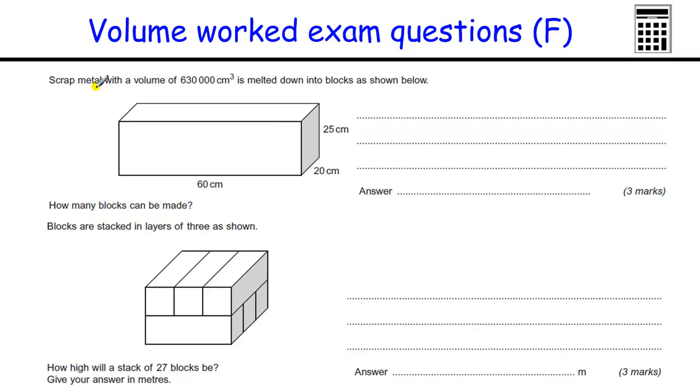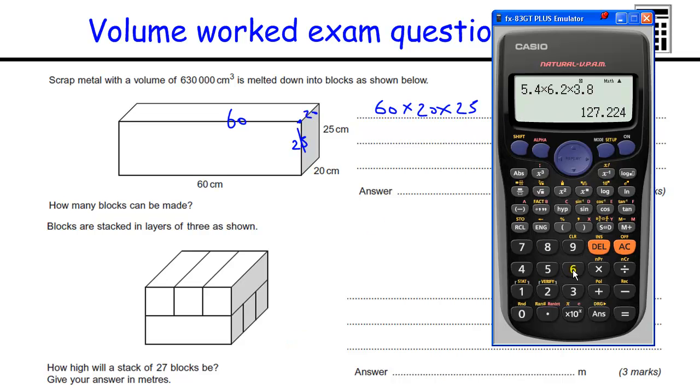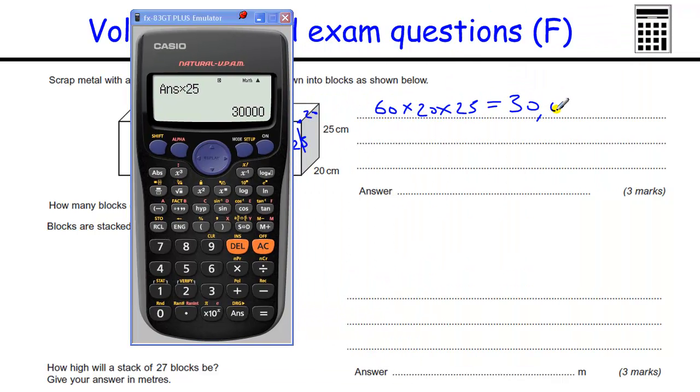OK. It's an interesting question. You're told the volume is that. Meltdown blocks are shown below. How many blocks can be made. So we're going to use this much scrap metal to make these blocks. So we need to work out how much this block is. This block is going to be 60 times 20 times 25. When you're looking at a cuboid, if you pick any corner and just look at the three lengths that are coming off that corner, 20, 25 and 60, they're the numbers you multiply together. Out comes the calculator. 60 times 20 is going to be 1,200. Times by 25. What's that going to be? 30,000.